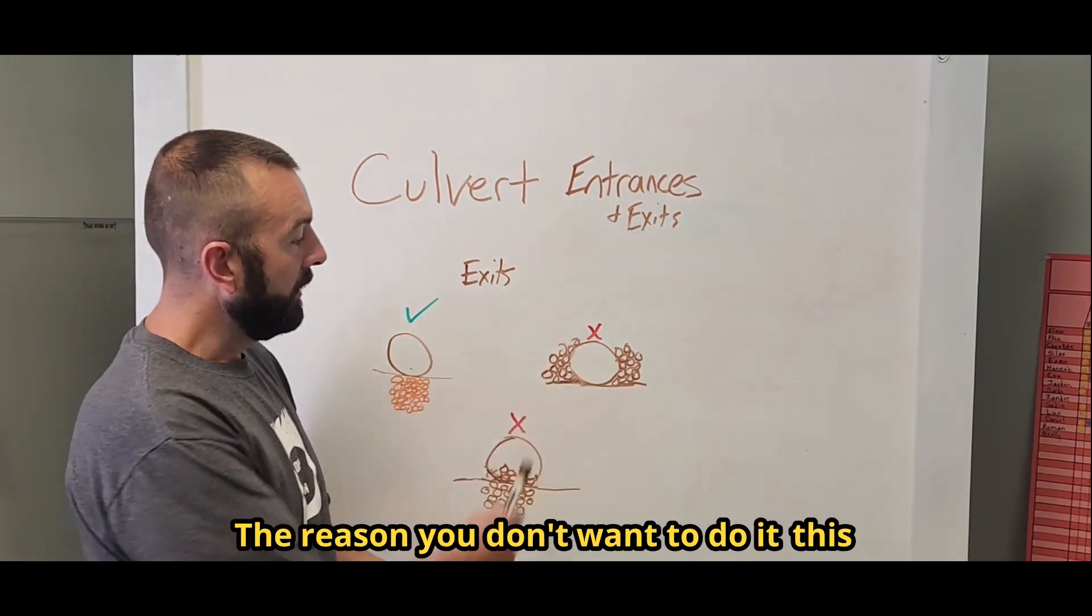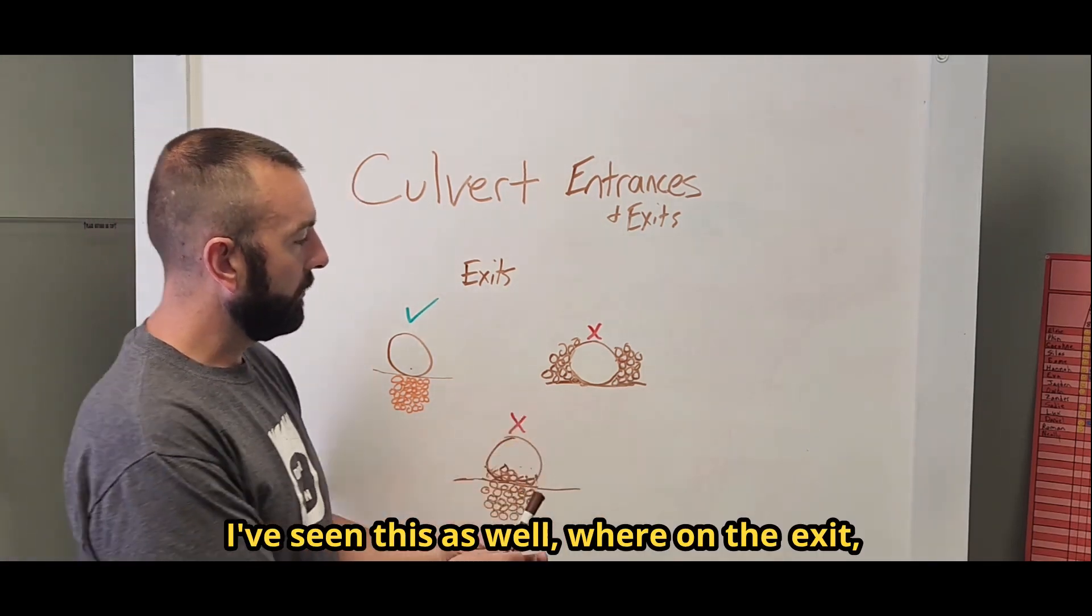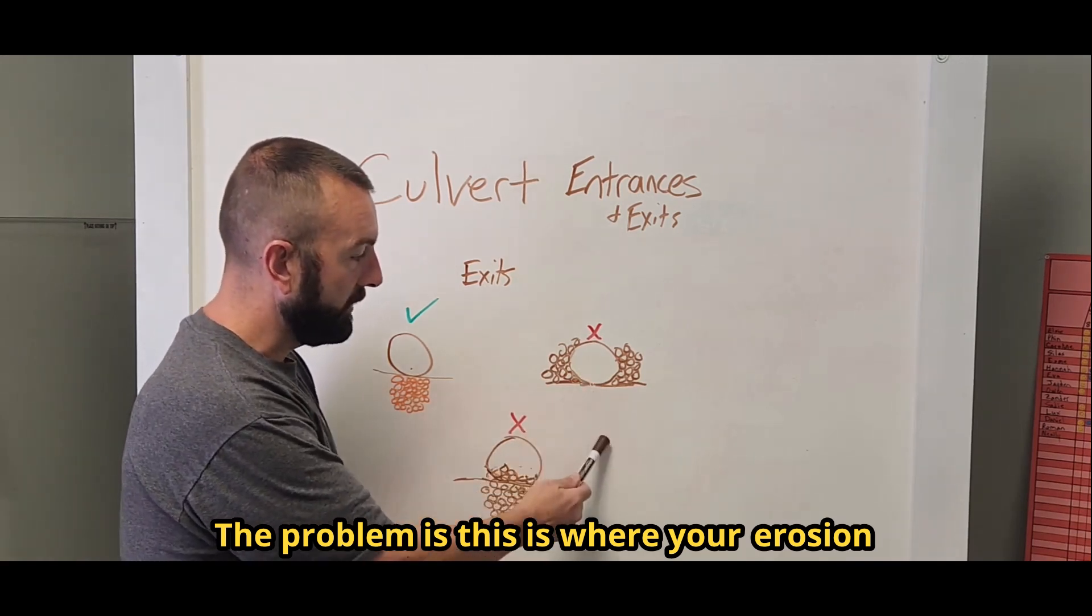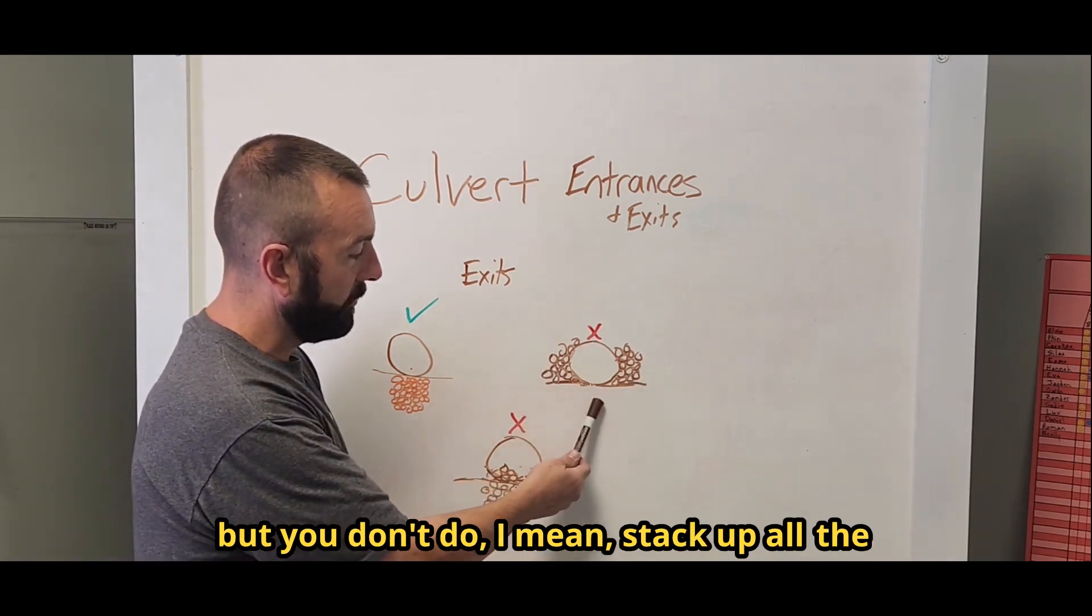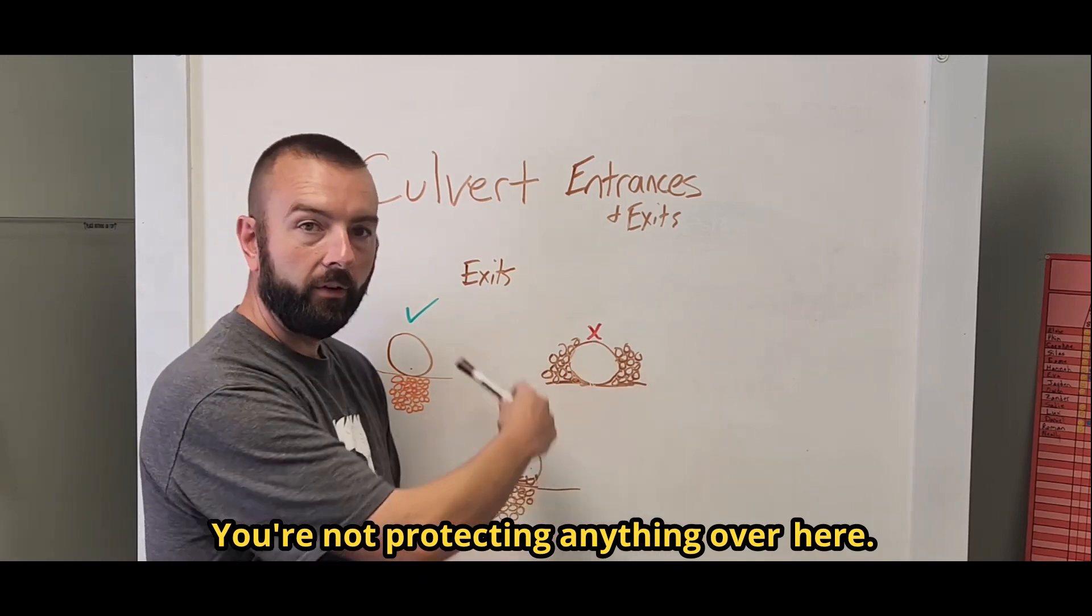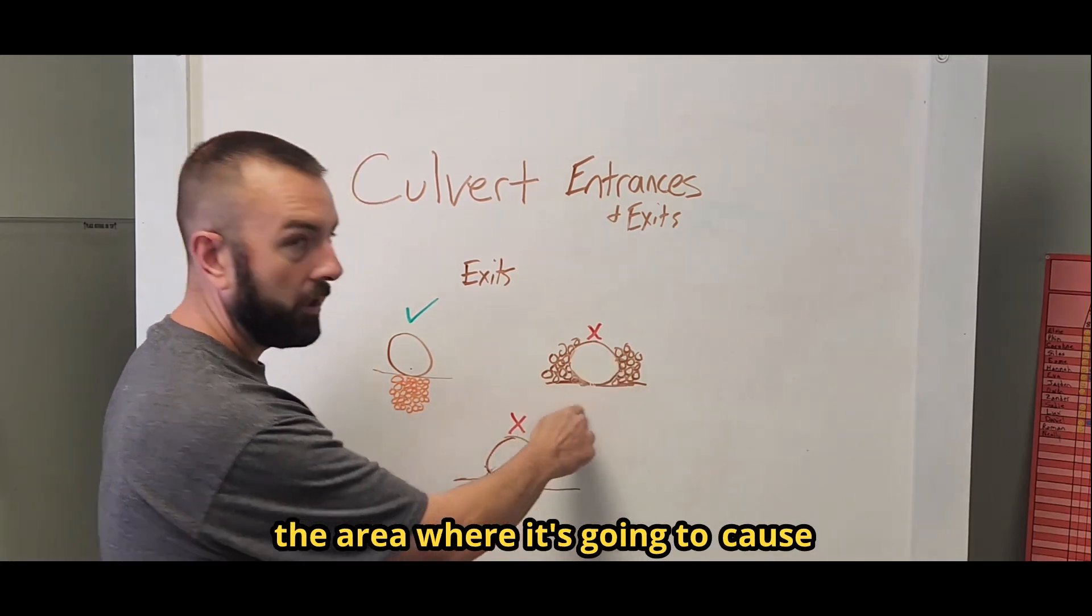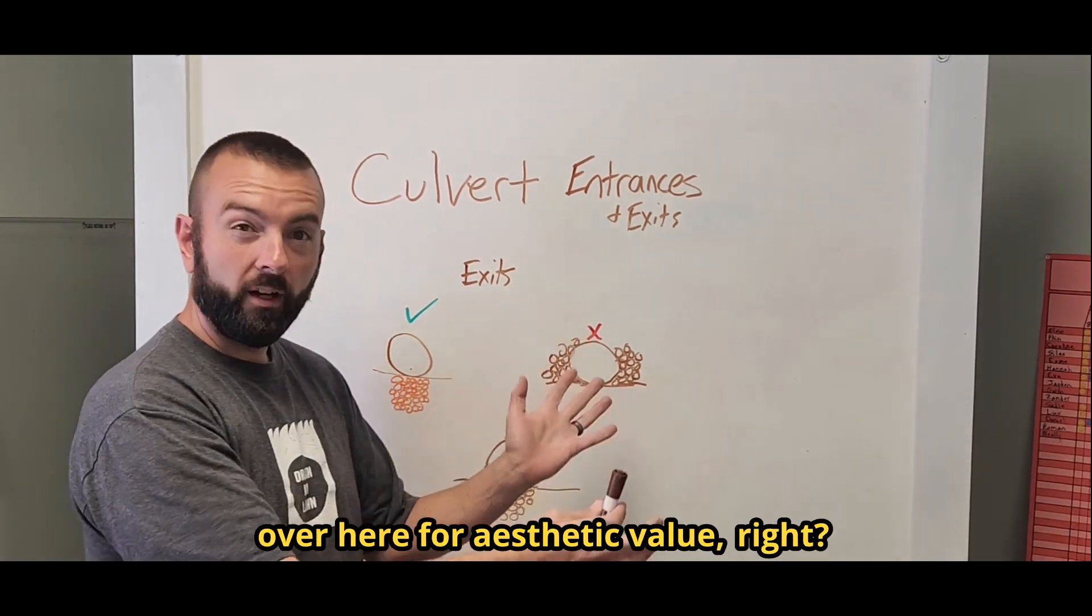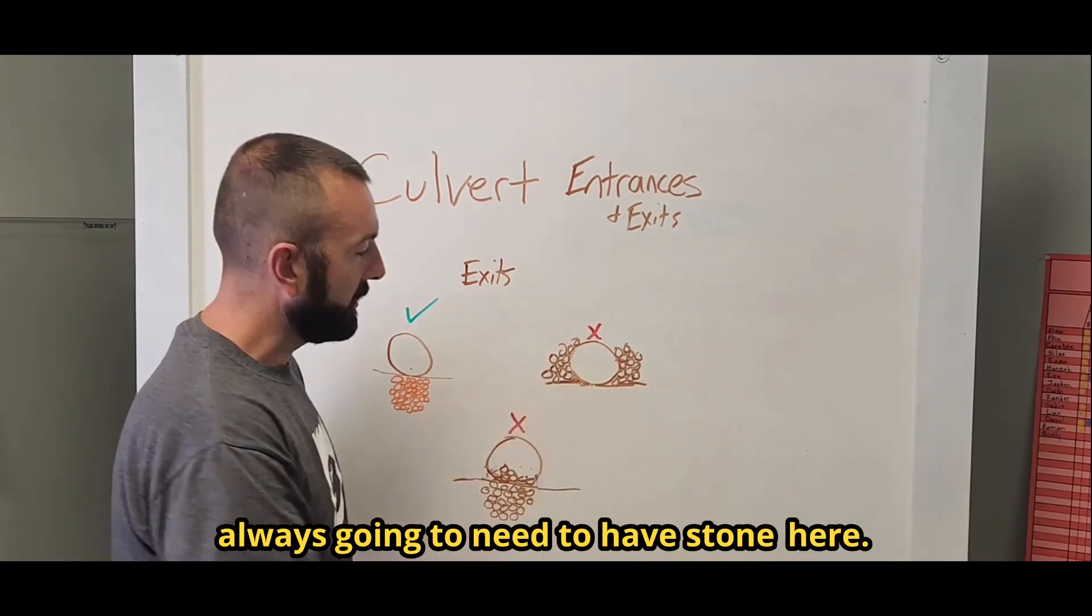So this is an example of what not to do. The reason you don't want to do it this way is because this is not actually helping at all. I've seen this as well, where on the exit, you just basically do the same thing as on the entrance. The problem is this is where your erosion is. There's no erosion possibility on the outside at all. So if you just stack up all the rock here, but not in this location, you're just going to have full erosion. You're not protecting anything over here. So you have to understand what's happening on the exit. Water's coming out and this is going to be the area where it's going to cause destruction. We have to take that into account. Now it doesn't mean you can't stack rocks over here for aesthetic value. That can make it look fine. Or if you have some other erosion going on that you need to take care of, but you're always going to need to have stone here.